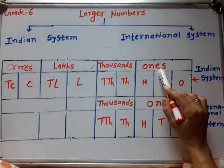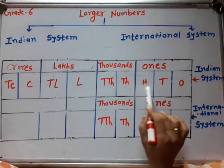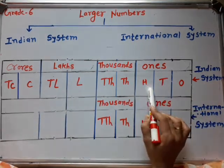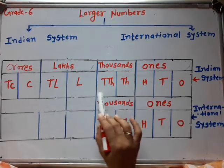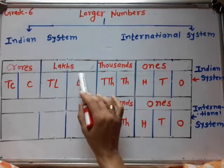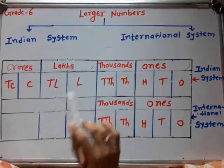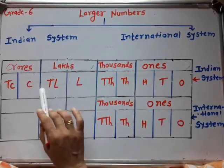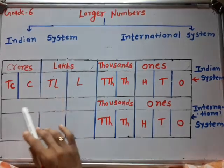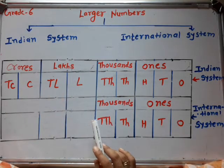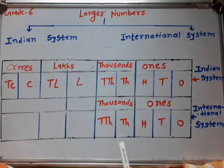The ones period is divided into three places: ones, tens, hundreds. The thousands period is divided into thousand and ten thousand. The lakhs period is again divided into two places: lakh place and ten lakh place. And the crores period is also divided into two places: crore and ten crore.